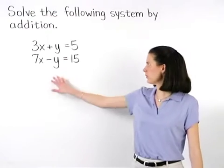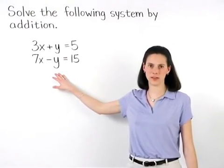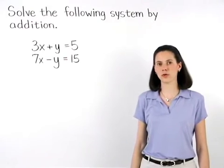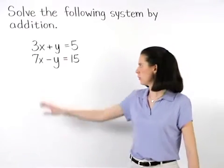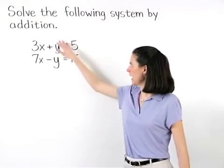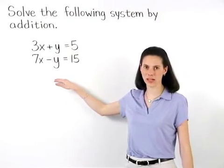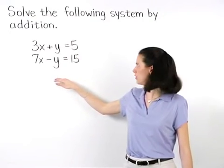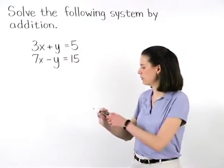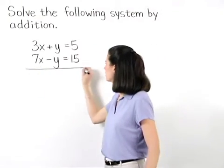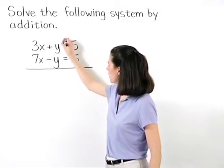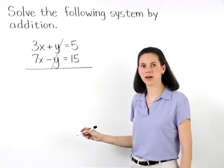To solve this system of equations by addition, our first goal is to cancel out one of the variables by adding the two equations together. Notice that if we add these two equations together, our plus y and minus y will cancel out.